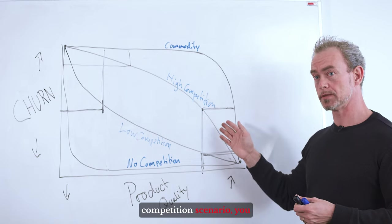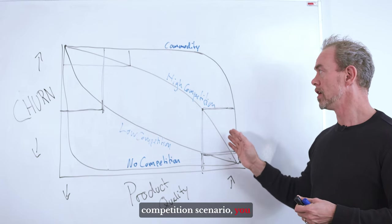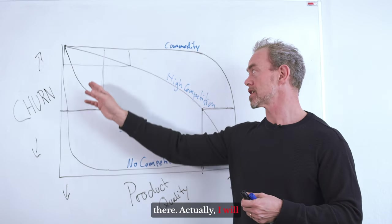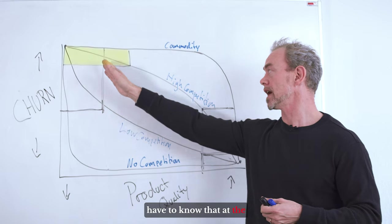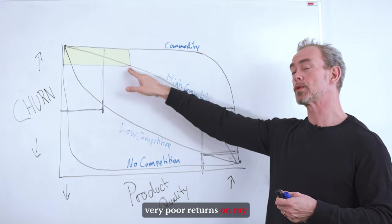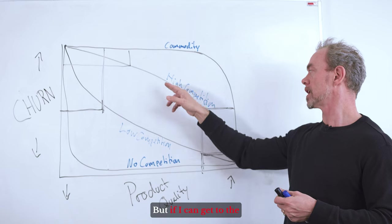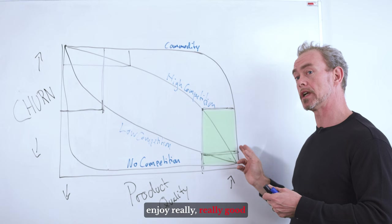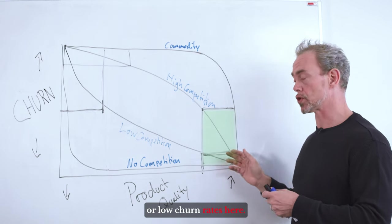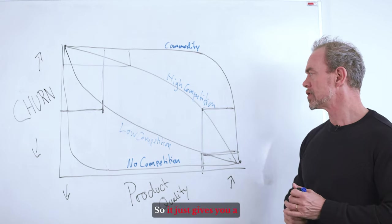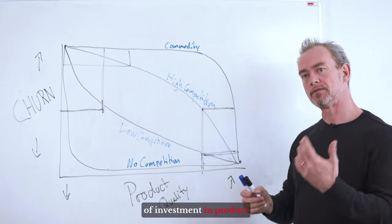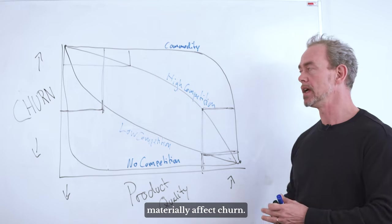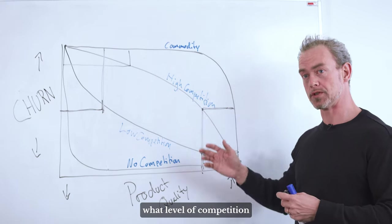If you have a high competition scenario, you might even say, if I have a really shitty product, well, if I can survive there, I will have to know that at the beginning I will get very poor returns on my product quality. But if I can get to the high end of the market and be one of the product leaders here, then I can enjoy really low churn rates here.